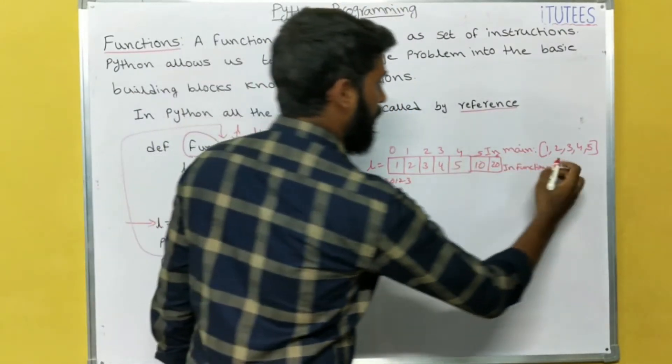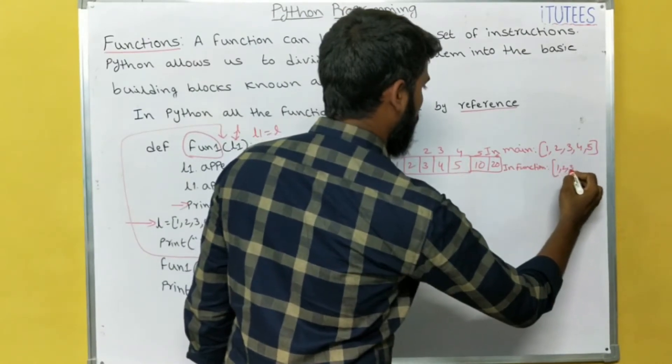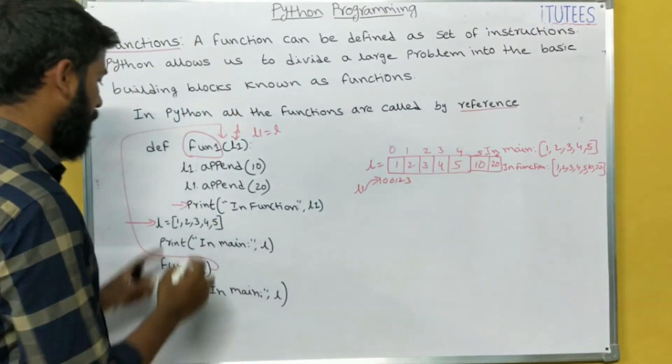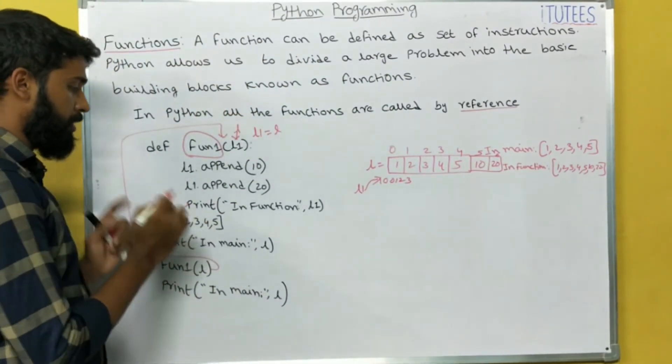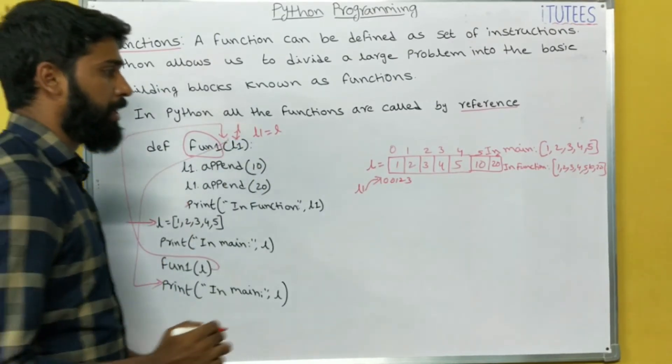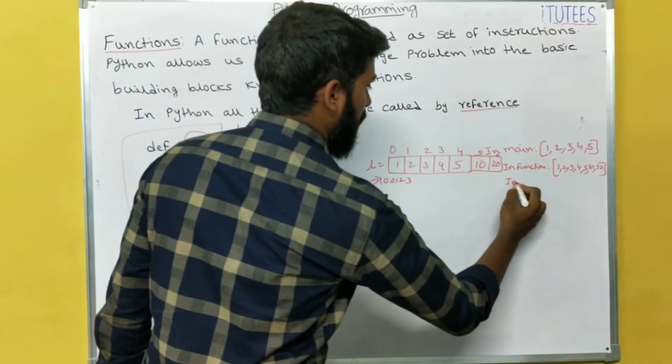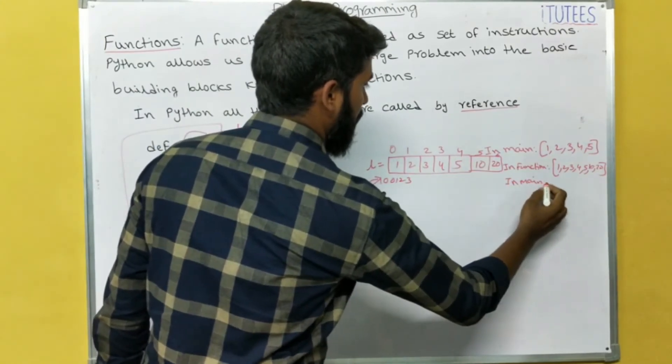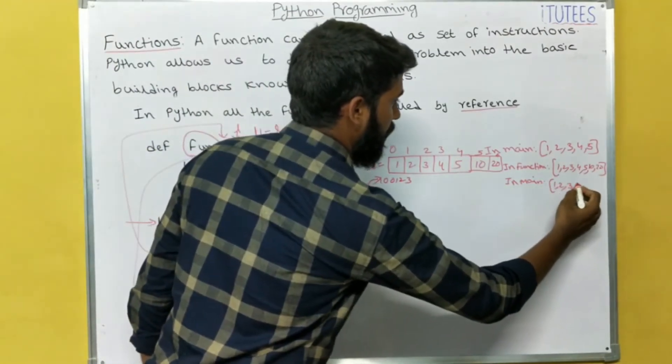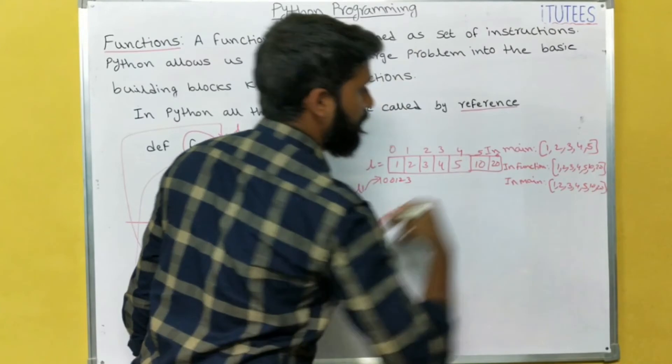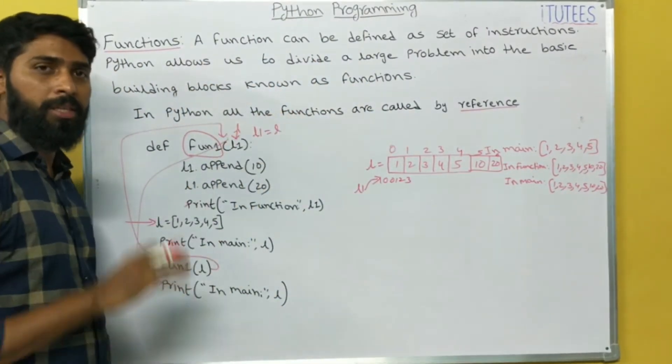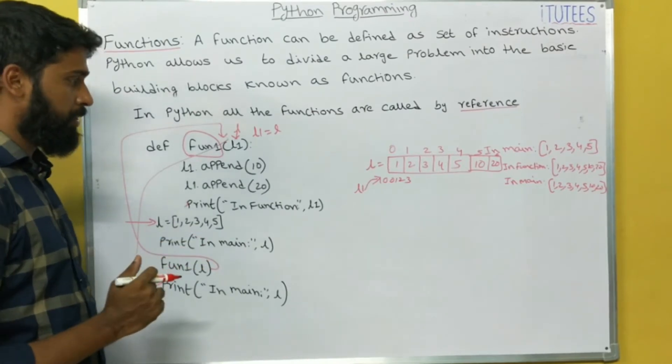Now L1 dot append of 10 means that 10 is append here. L1 dot append of 20 means that is append here. Print in function, now we are in function. L1, what is the L1? 1, 2, 3, 4, 5, 10, 20. So after executing this instruction, the control goes to here. Print in main L. In main L, what is the L? L is this one. So that means what you observe, in Python the functions are called by reference.